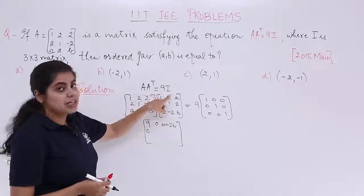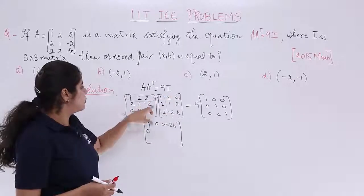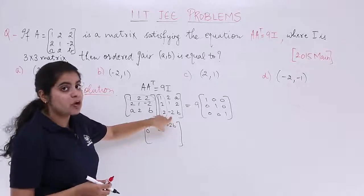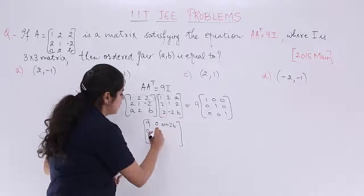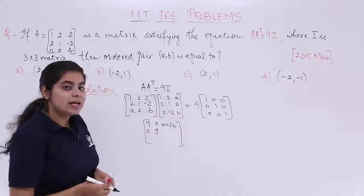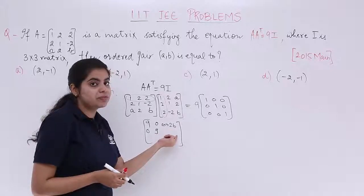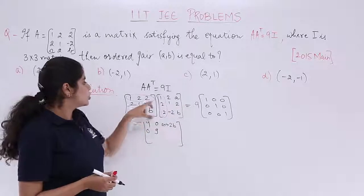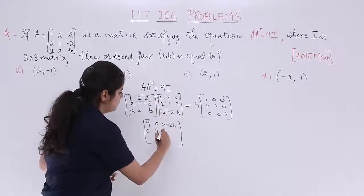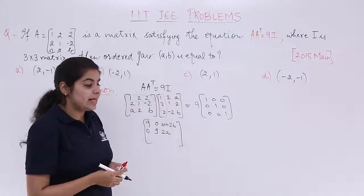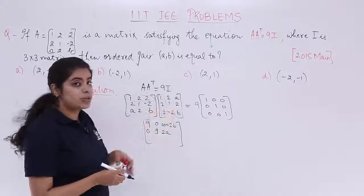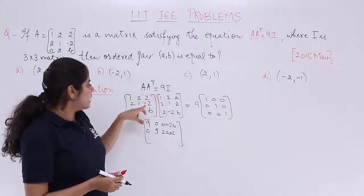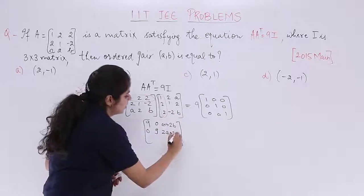Next, second row, second column. So it is 2 times 2 is 4, 1 times 1 is 1, 4 plus 1 is 5 and it is plus 4. So 5 plus 4 is 9. Last but not the least element of the second row is second row, third column. So it is 2 into A, 2A. Next, 1 into 2 is 2. So 2A plus 2 and minus 2 into B is minus 2B.